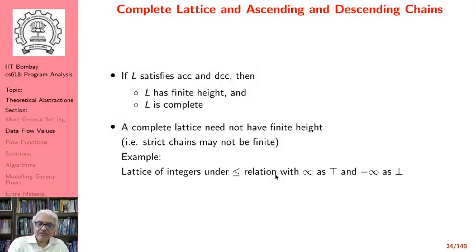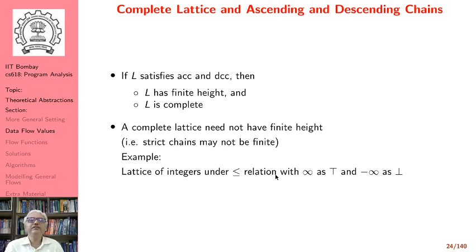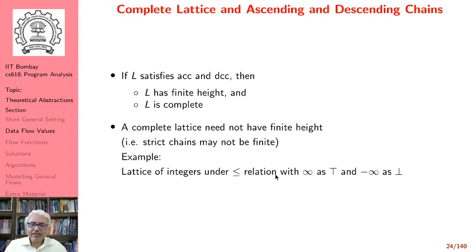There are important results. If a lattice L satisfies both ACC and DCC — if all ascending chains are finite and so are all descending chains — then lattice L has a finite height and lattice L is complete. Note that L has only a finite height; the lattice L need not itself be finite because it may have an infinite width, and we will see this in the case of constant propagation.